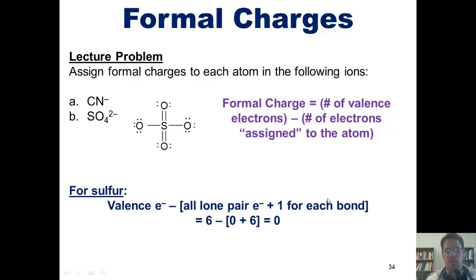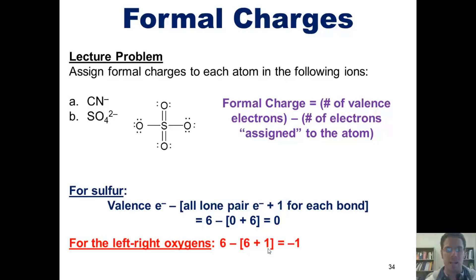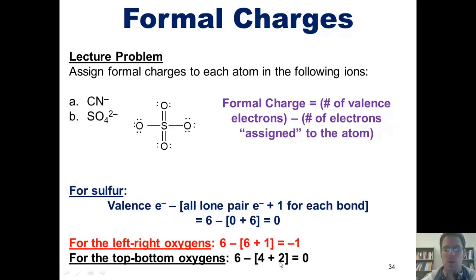For the oxygen atoms in this structure, there are actually two different kinds. The ones at left and right, and the ones at top and bottom. For the left and right oxygens, each has six valence electrons, six lone pair electrons, and one bond. Thus, their formal charge is negative one. For the top and bottom oxygens, each has six valence electrons, four total lone pair electrons, and two bonds. Thus, the overall formal charge for each of the top and bottom oxygens is six minus the sum of four plus two, which is zero.